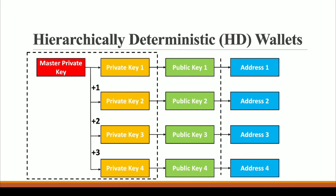Why are they called Hierarchically Deterministic Wallets? The reason is simple — because as you can see, it is like a hierarchy: a master key generating this, then this, then this. Now, in a real-world application, let's say you are a CEO of a company and you want to give certain authority to your employees. You can hold your master private key and provide private key one, two, three, and four to your managers, so they can do any kind of payments or transactions for your company using those private keys.